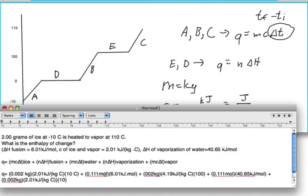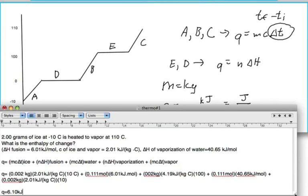And here for n delta H, I converted that mass of two grams of H2O into moles to get the final answer where q equals 6.10 kilojoules. You have to take note that q is positive; therefore, this reaction is an endothermic reaction.